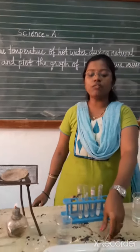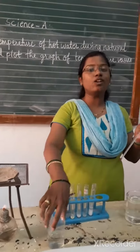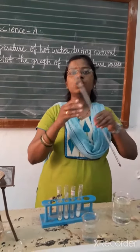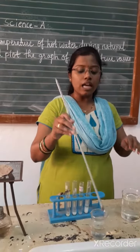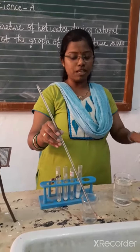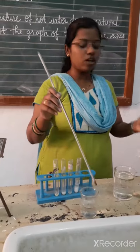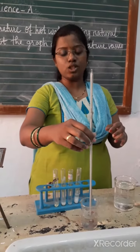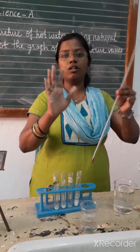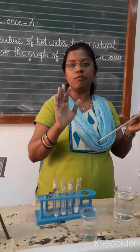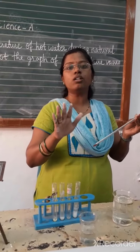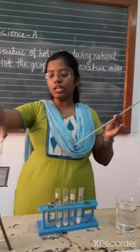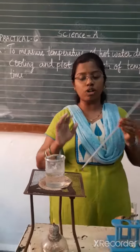We are going to use a thermometer. We will take normal water and first see the temperature of water at room temperature. Here it is showing 28 degrees Celsius, so I will note the room temperature — that is, the water temperature is 28 degrees Celsius.